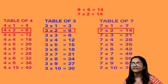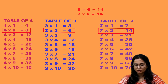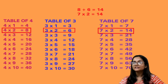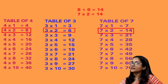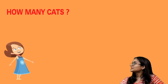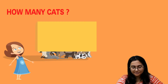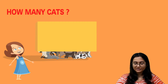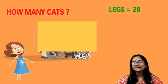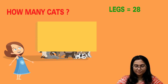This is how you can find the tables of larger numbers as well. Now: how many cats? Some of Gayatri's cats were playing in a box and when she tried to count them, all she could see were legs. She counted 28 legs — so how many cats are there in the box?